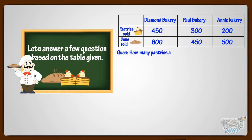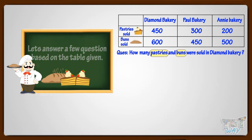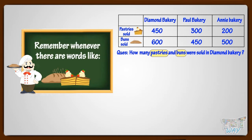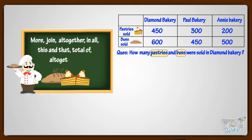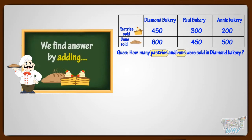How many pastries and buns were sold in Diamond Bakery? Let's answer the question. The question is to find out pastries and buns. Remember, whenever there are words like more, join, altogether, in all, this and that, or total of, we have to find the answer by adding.